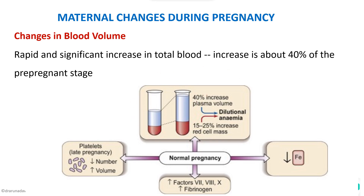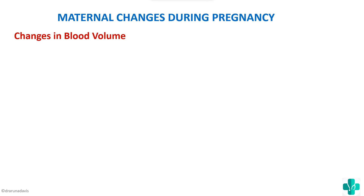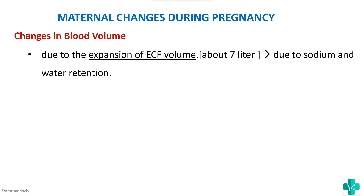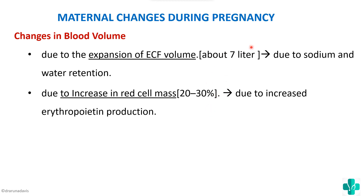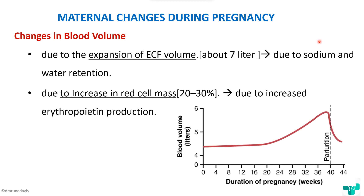Another change in blood volume is that the extracellular fluid (ECF) volume increases, due to retention of sodium and water. There is also an increase in red cell mass due to increased erythropoietin production. Looking at the graph, blood volume increases especially after 24 weeks of gestation and reaches a peak around the time of parturition. So the changes are expansion of ECF and an increase in red cell mass.